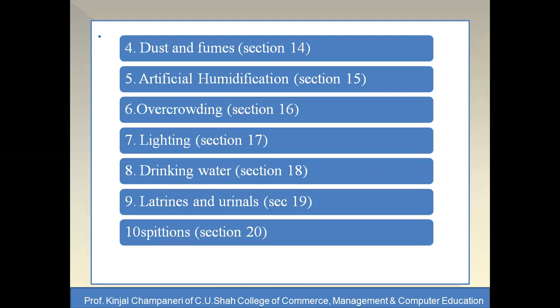Provisions must be made for prevention of glare and formation of shadows in the workspace. The eighth provision is drinking water under Section 18 — the factory must provide suitable and clean drinking water. The ninth is latrines and urinals under Section 19 — separate facilities must be provided for females and males at sufficient distances and properly maintained. The tenth is spittoons under Section 20 — a sufficient number of spittoons should be provided at convenient places and maintained in clean and hygienic conditions.